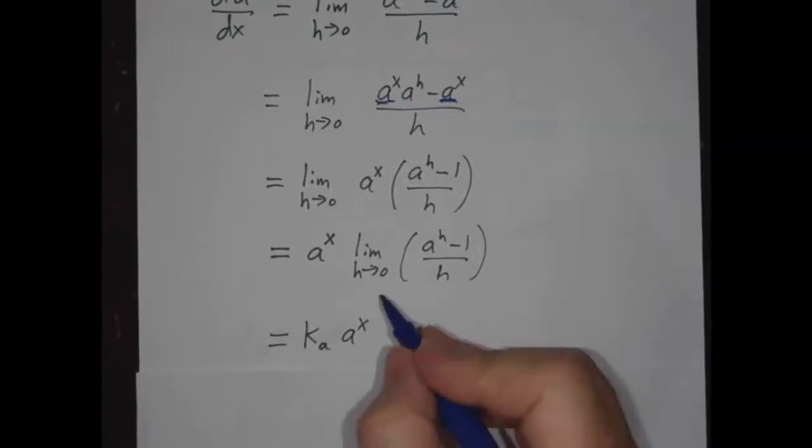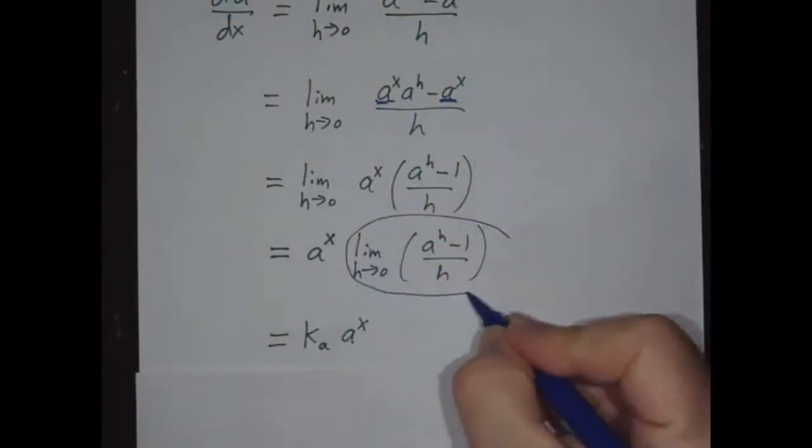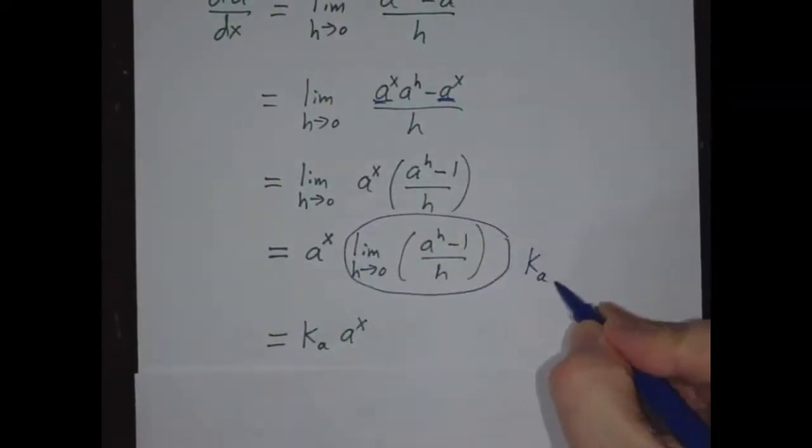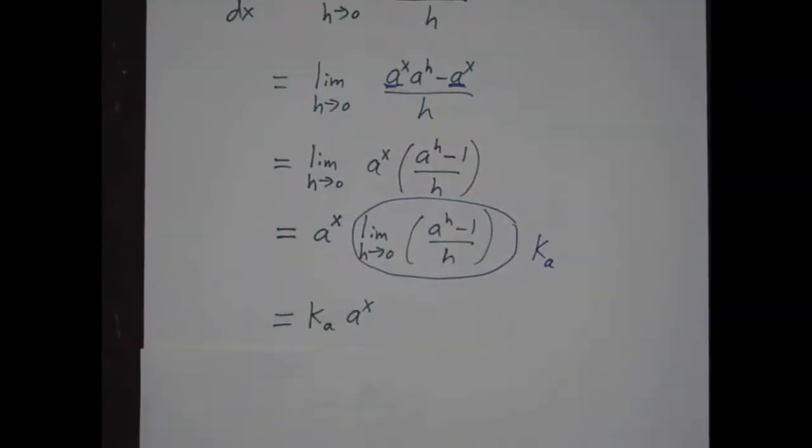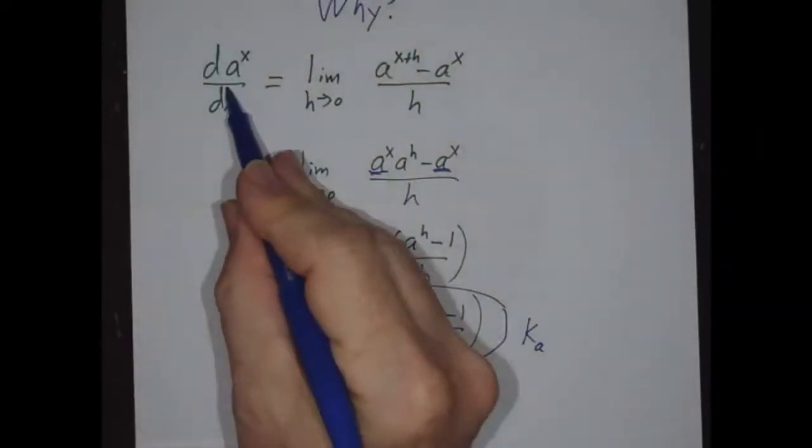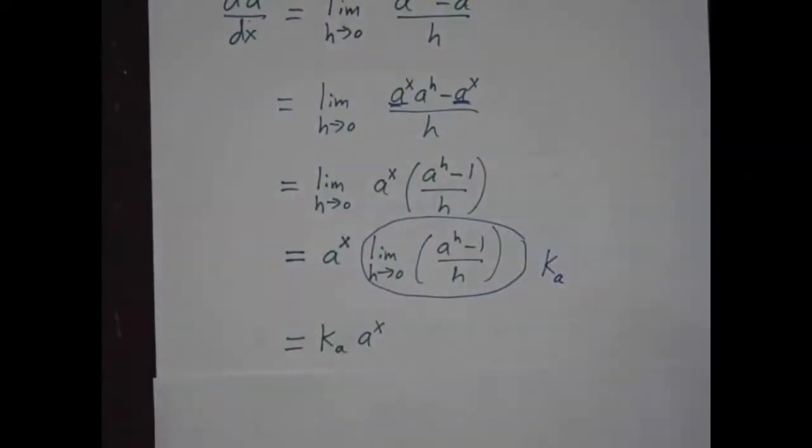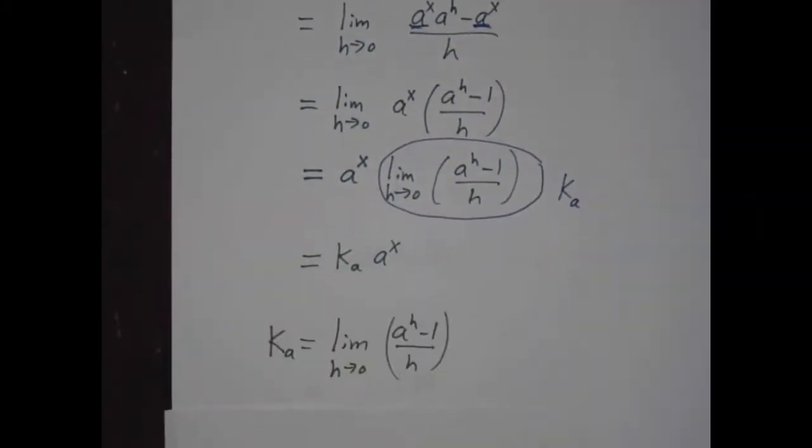And so this is our constant. This is ka. So we get the derivative of an exponential is a constant times that exponential, where the constant is this crazy limit.